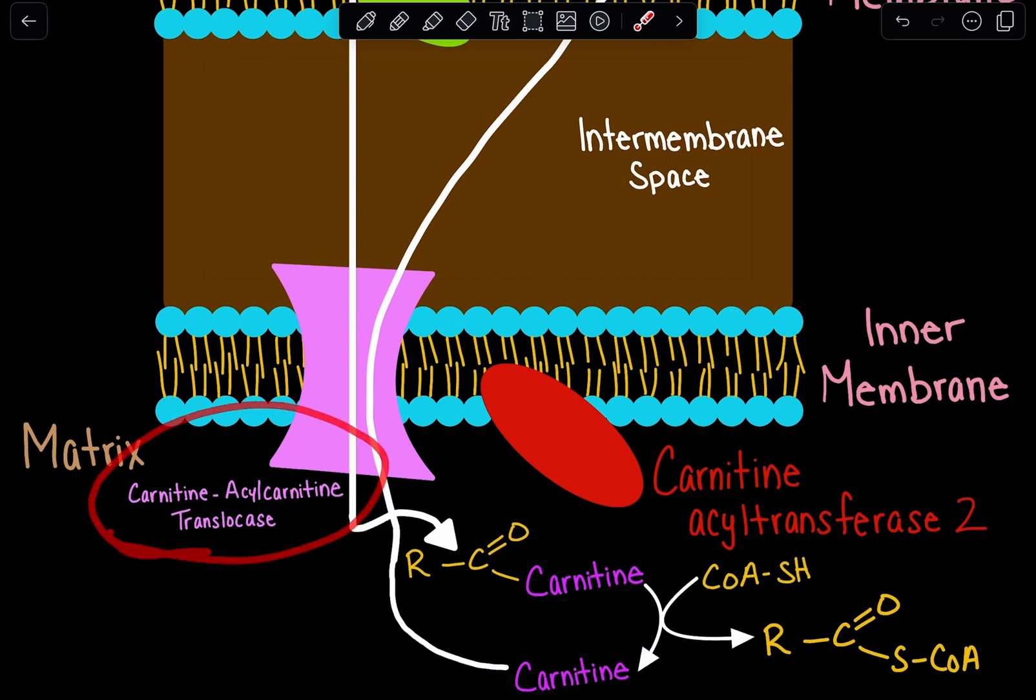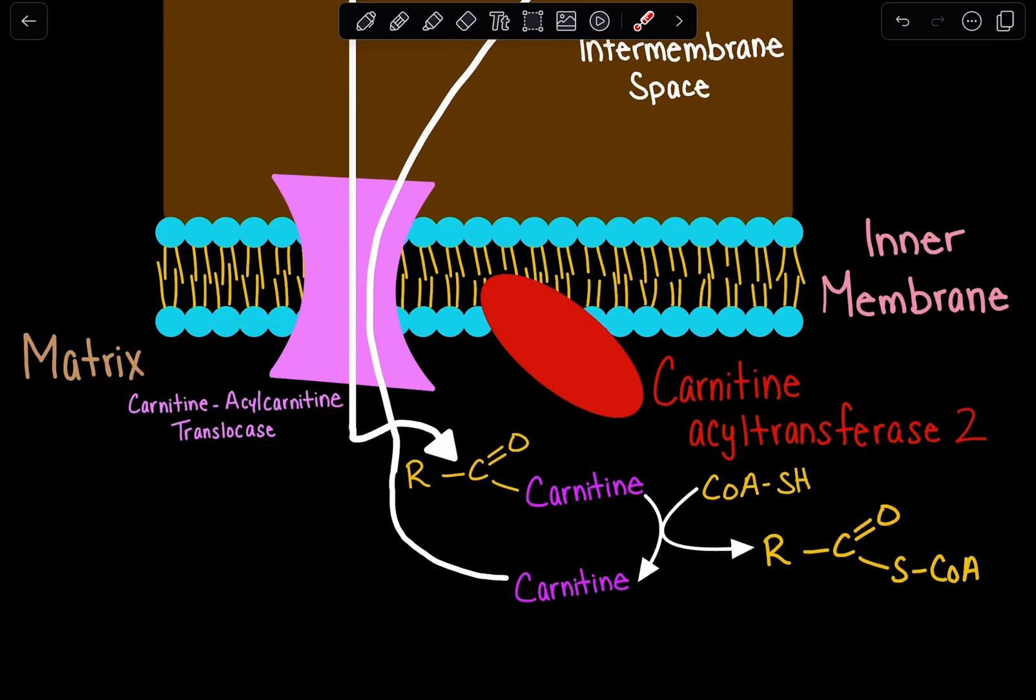This name will make a lot of sense once we're done talking about this mechanism. We have this translocase, and we can see that our fatty acid has now reached the inner matrix of the mitochondria.